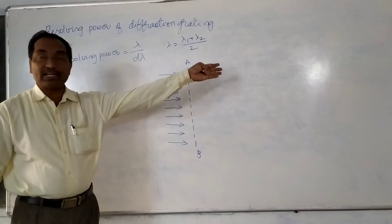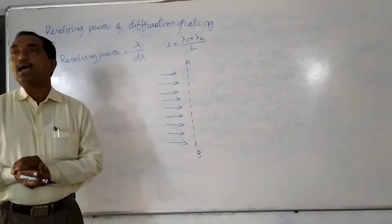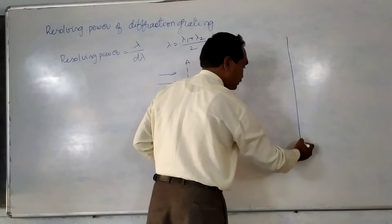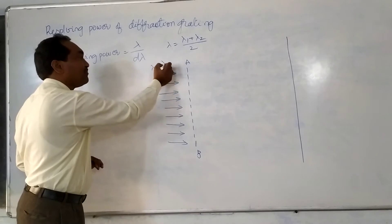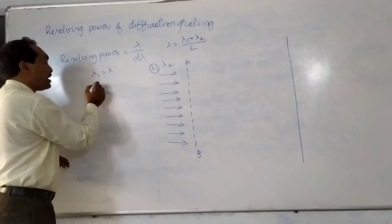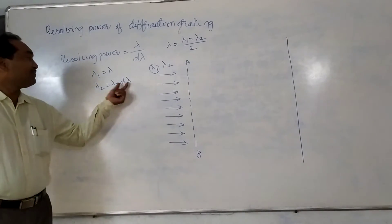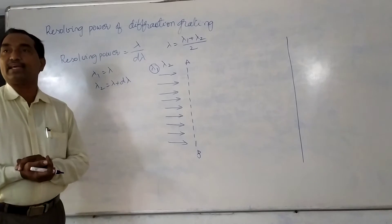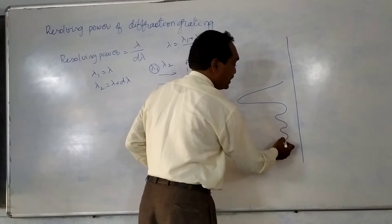When we observe these diffracted waves, we see bright and dark bands on the screen or through the telescope eyepiece. If the light contains two colors — wavelength lambda-1 and wavelength lambda-2 — lambda-1 may be taken as lambda, and lambda-2 may be taken as lambda plus d-lambda. The difference between the two wavelengths is d-lambda. For the first spectral line of wavelength lambda, the principal maximum is here, followed by the first minimum, secondary maxima, second minimum, and so on.